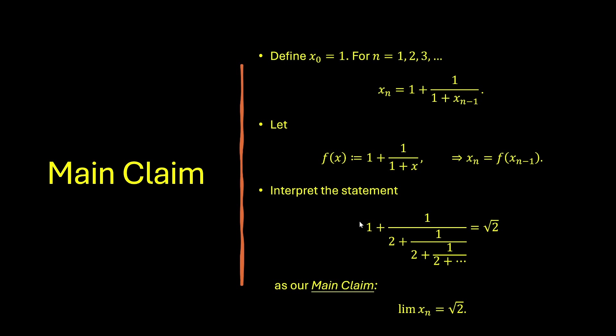So now we're ready to formulate our main claim. So here we define a sequence by a recursive relation. So then we're going to write the relation in a more compact form by defining the function f of x. So f of x is 1 plus 1 over 1 plus x. This is motivated by the right-hand side of the recursive relation. So the right-hand side is just f of xn minus 1. And therefore, xn is equal to f of xn minus 1. So now we can interpret the statement as our main claim, which is stated as follows. That is, the limit of the sequence xn, which we define by a recursive relation, is equal to the square root of 2.